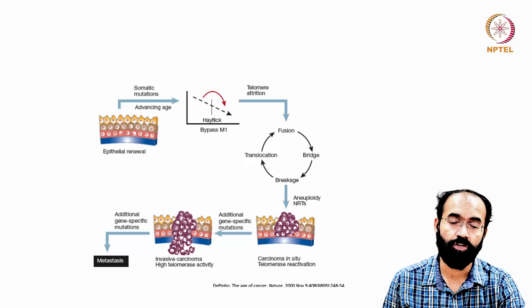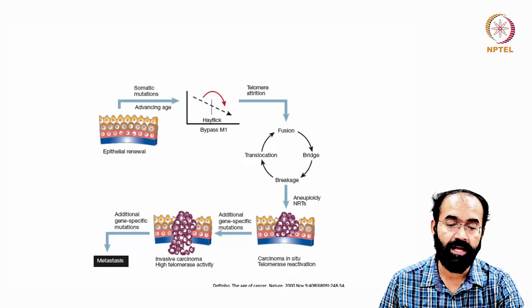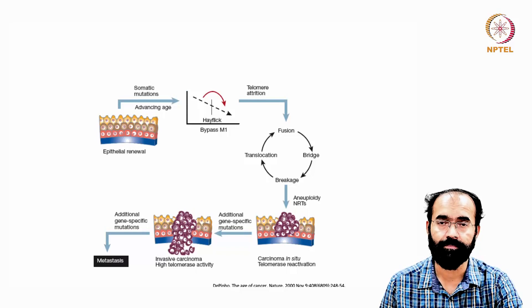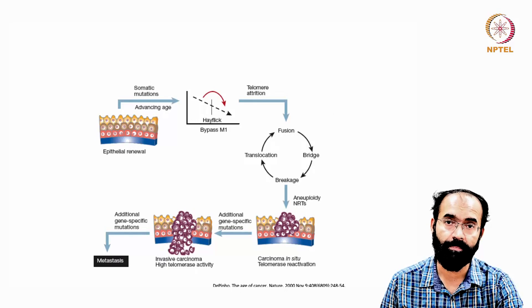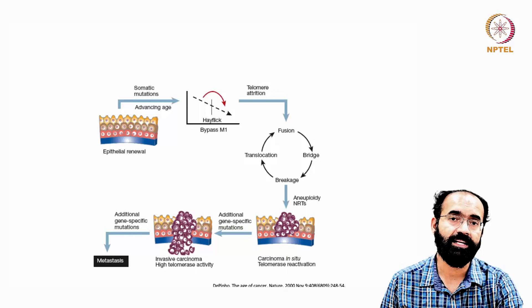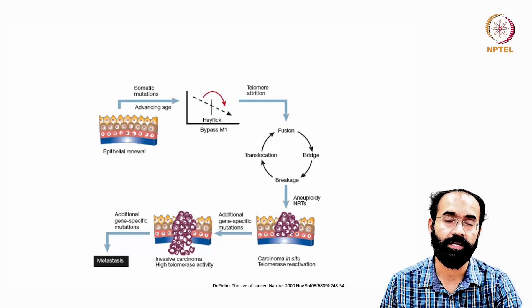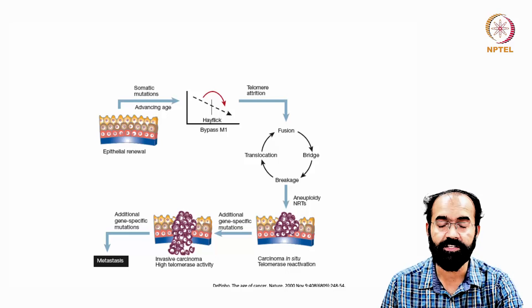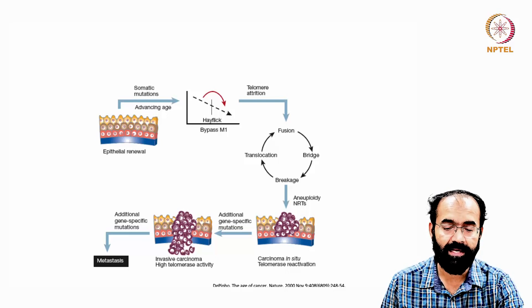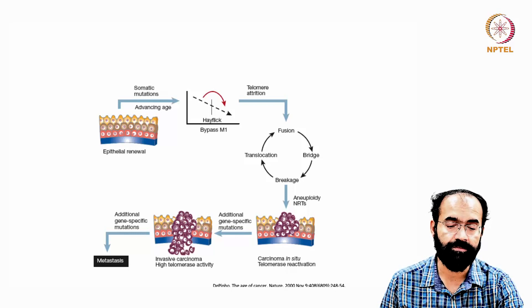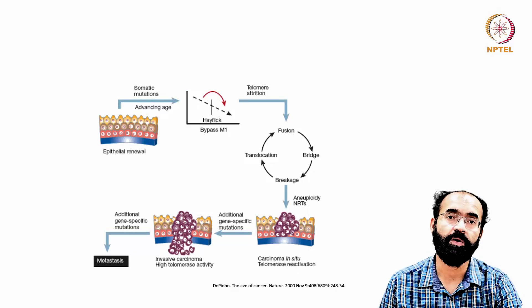To revisit: somatic cells acquire mutations, reach the Hayflick limit, and telomere length continues to shorten. This leads to fusion and bridge formation of bicentric chromosomes. The chromosomes break, and these broken chromosomes can form circular chromosomes, fuse elsewhere, cause recombination, or translocate to another chromosome — continuing the cycle — producing aneuploid cells. Aneuploid cells establish carcinoma, and further mutations are required to produce invasive carcinoma and then metastasis.